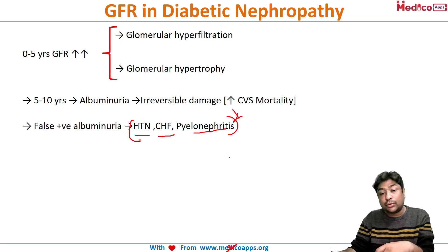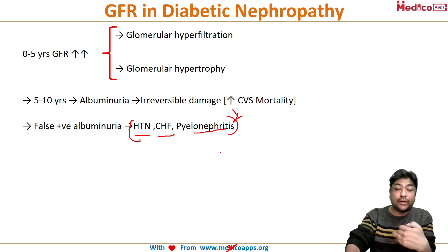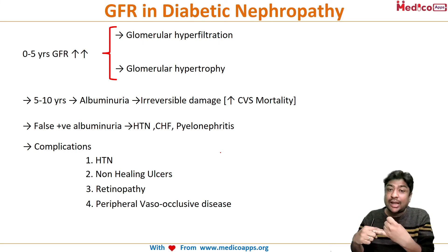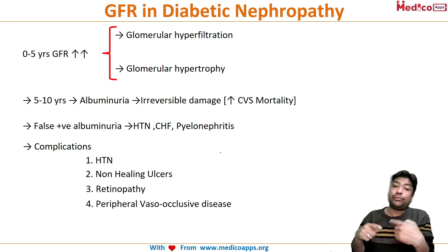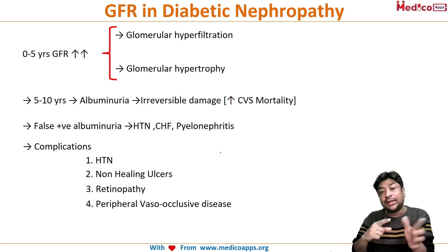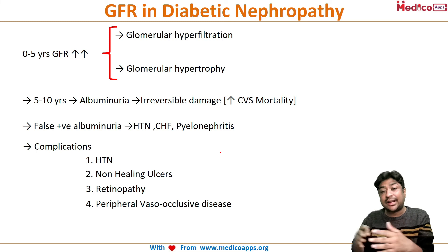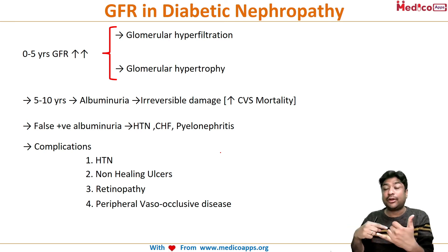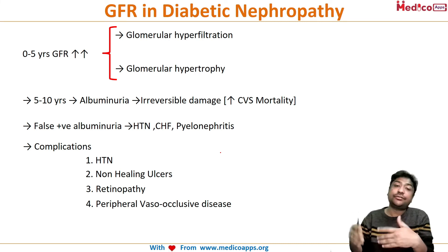As the disease progresses beyond 10 to 15 years, other diabetic complications set in alongside nephropathy: hypertension, non-healing ulcers, retinopathy, and peripheral vascular occlusive disorders. To summarize progression: first five years are primarily reversible with glomerular hyperfiltration; after five to ten years of poor control, irreversible albuminuria and increased cardiovascular mortality develop; after 10 to 15 years, the full spectrum of diabetic complications appears.